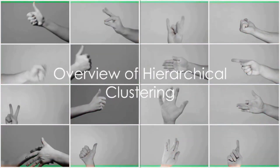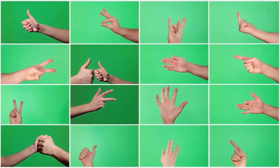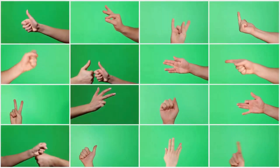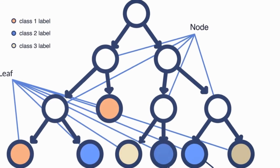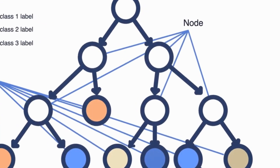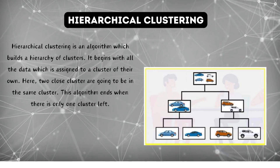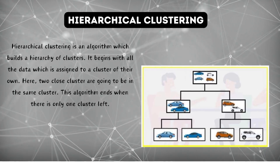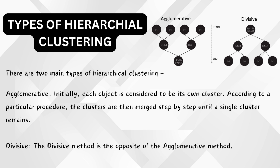Hierarchical clustering is a method of cluster analysis which seeks to build a hierarchy of clusters. It's a strategy where we start by treating each object as a singleton cluster and then successively merge or split groups until we reach a certain end condition. There are two main types of hierarchical clustering: agglomerative and divisive. In agglomerative clustering, each object is considered to be its own cluster, and the clusters are then merged step by step until a single cluster remains. The divisive method is the opposite of the agglomerative method.